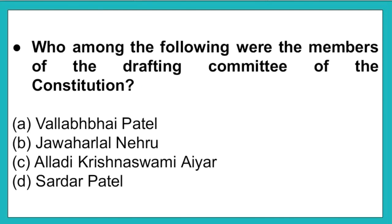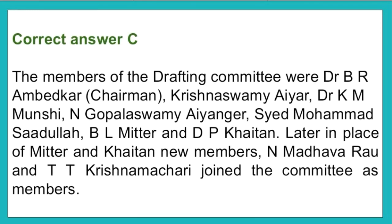The next question: Who among the following were the members of the drafting committee of the constitution? Option A: Vallabhbhai Patel. Option B: Jawaharlal Nehru. Option C: Alladi Krishnaswami Iyer. Option D: Sardar Patel. The correct answer is option C. The members of the drafting committee were Dr. B.R. Ambedkar (chairman), Krishnaswami Iyer, Dr. G. Munshi, Gopalaswami Ayyangar, Syed Muhammad Saadullah, B.L. Mitter, and D.P. Khaitan. Later, in place of Mitter and Khaitan, new members Madhav Rao and T.T. Krishnamachari joined the committee.